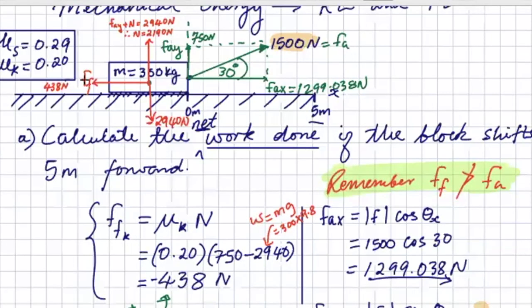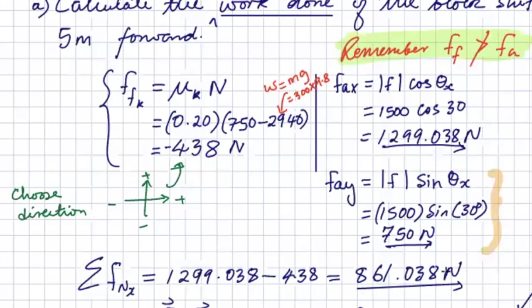Frictional force, and we know the x component, and we know that the object is moving horizontally in the x direction, so then we can start calculating the net force. The net force will be 1299.038, which is forward minus the frictional force, and that's what we said there.